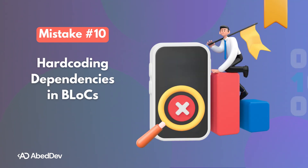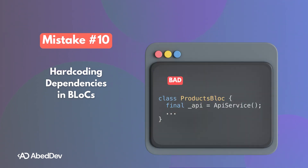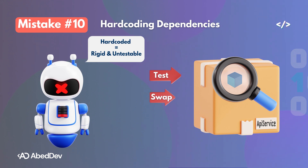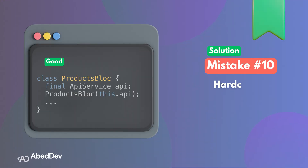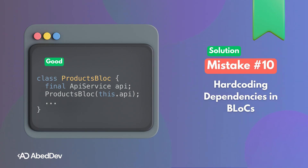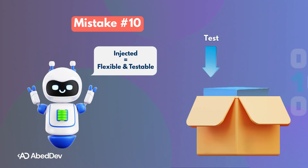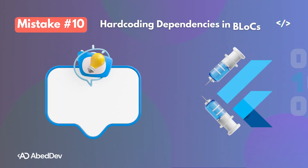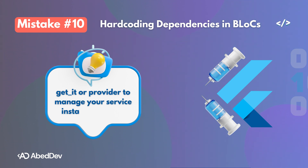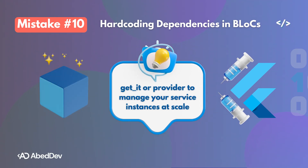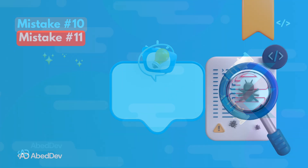Mistake number ten makes your app harder to test, scale, and maintain: hard-coding dependencies directly into your bloc. Your bloc is locked to one specific API service implementation — you can't mock it in a test, you can't swap in a fake dev version or offline version, and any change to ApiService could ripple through your bloc. The fix: inject the dependency through the constructor. Now your bloc doesn't care where the service comes from — it just uses it. Tests can pass in a mock, and your app can swap implementations. Bonus tip: use a dependency injection solution like GetIt or Provider to manage service instances at scale.